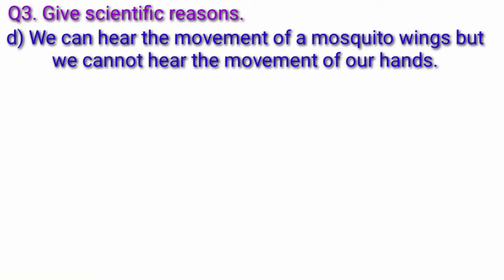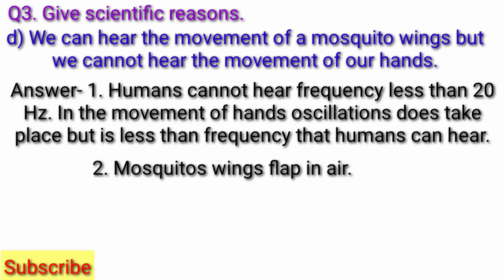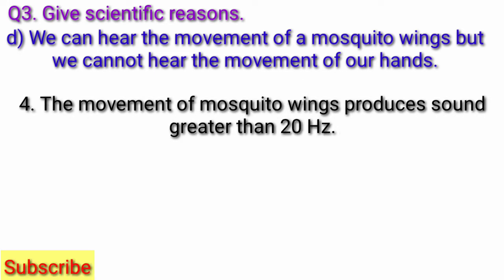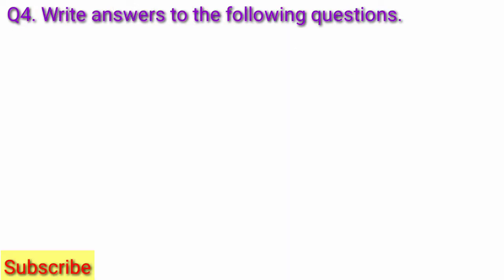Question D: We can hear the movement of a mosquito's wings but we cannot hear the movement of our hands. Answer: Humans cannot hear frequency less than 20 Hz. In the movement of hands, oscillation does take place but it is less than the frequency that humans can hear. Mosquito wings flap in air when they fly, producing a buzzing sound in our ears. The movement of mosquito wings produces sound greater than 20 Hz, allowing reception of such waves and their perception by the brain.